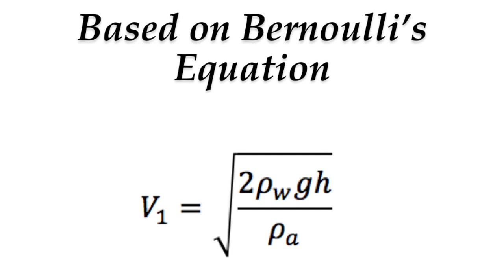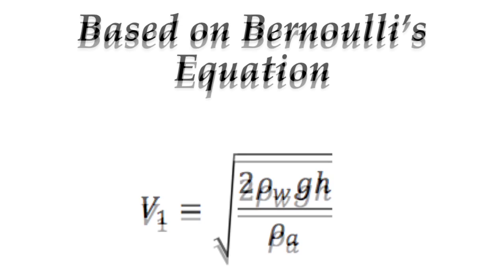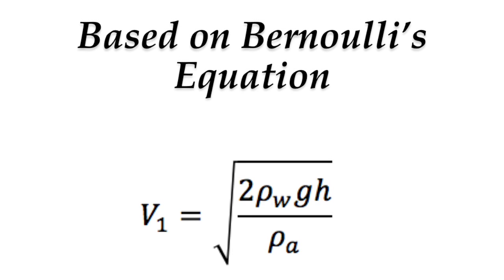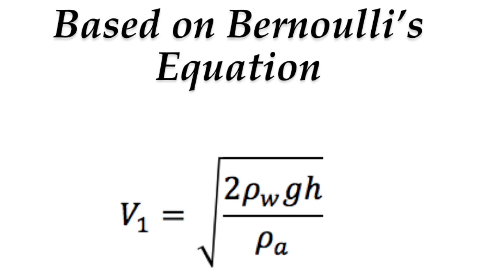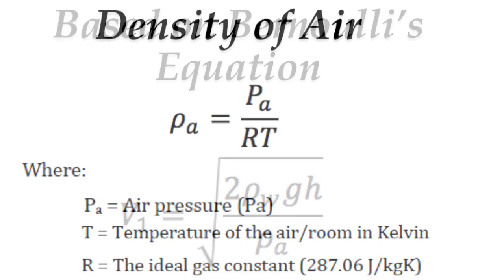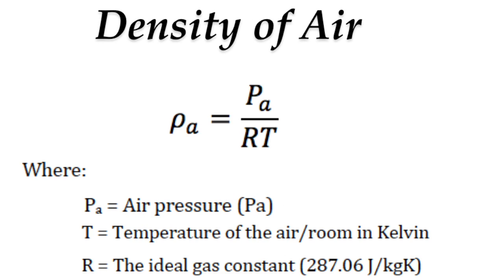Now, by substituting P2 back into the original Bernoulli's equation, we'll only have and end up with one unknown, which is V1. It is worth mentioning that V2 is equal to 0, since it represents the velocity of the air stream when it reached water in the tube. That is why it was not shown on the above equation. Rho A is the density of the air, which can be calculated using the shown equation.